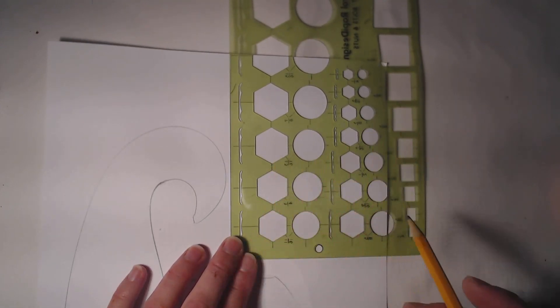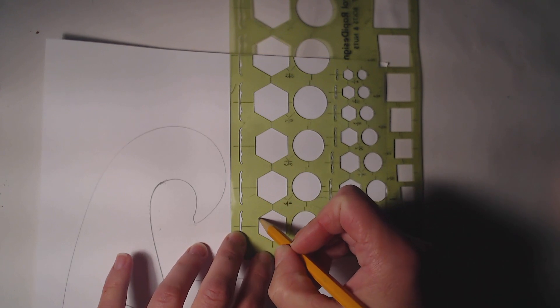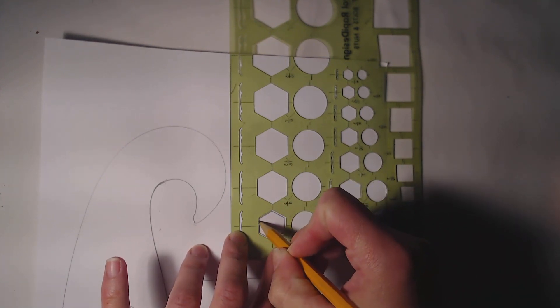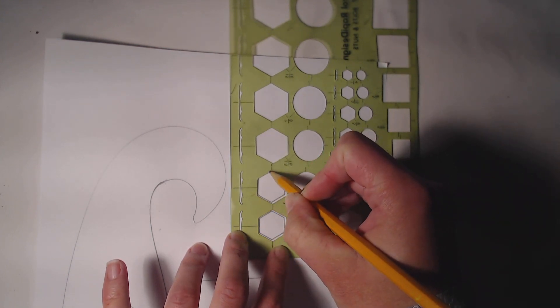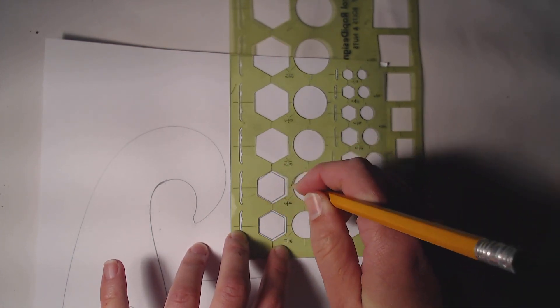I have stencils with all different shapes on it, or you can make your own. And you're just going to make sure your pencil tickles the edges of it. So you want to make sure you hold your stencil so it doesn't move, and you're going to trace it.